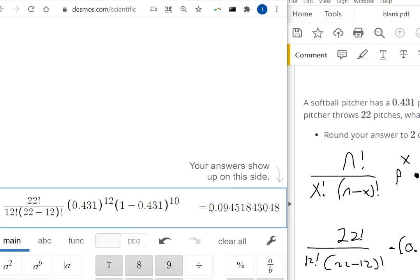It looks like a probability of 0.0945, so that's the probability. They want two decimals, so I'd say 0.09. That's the probability of throwing 22 pitches and getting 12 strikes.